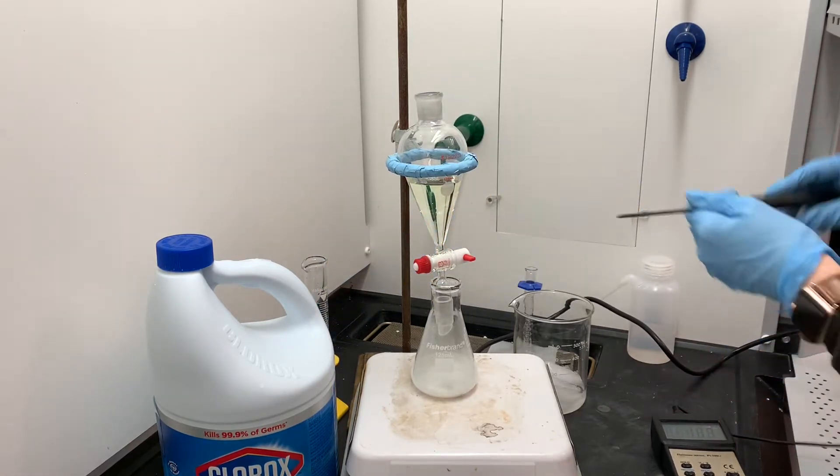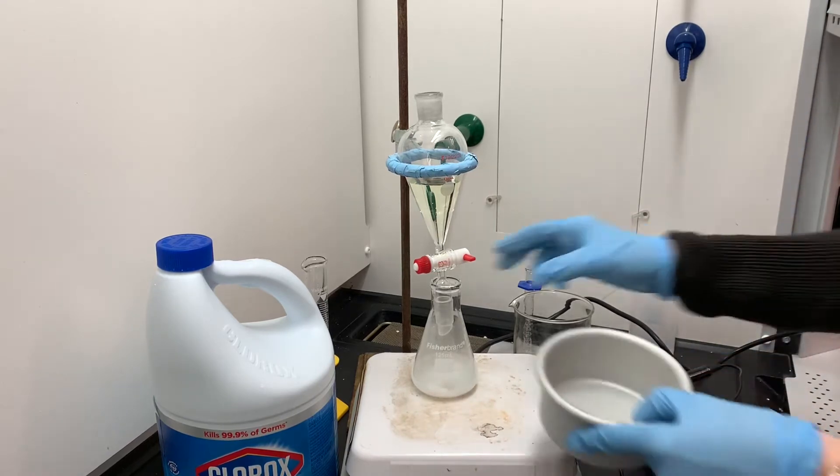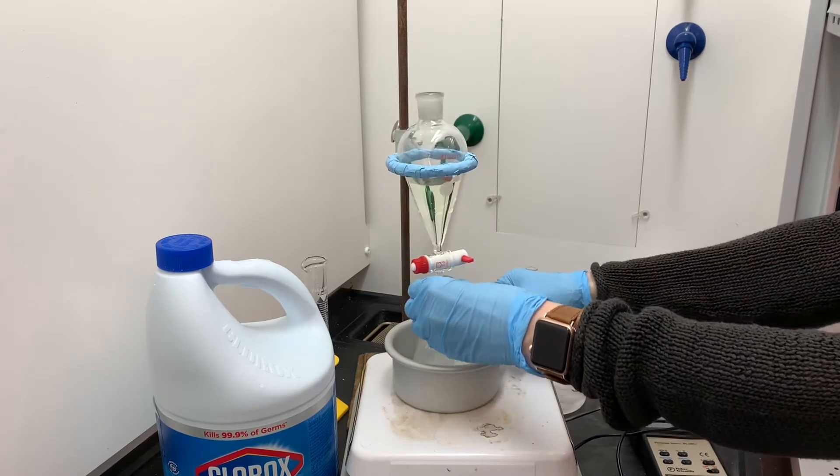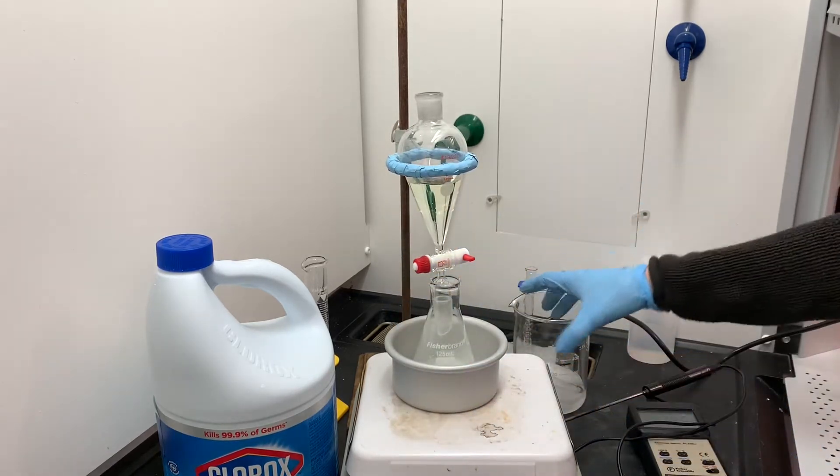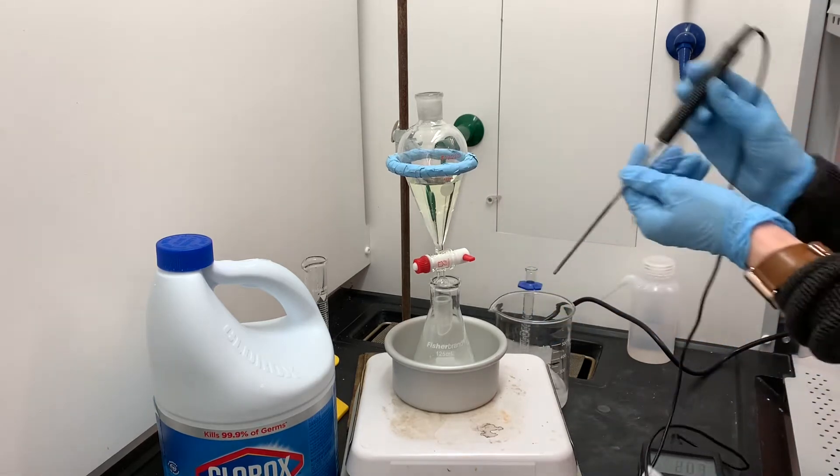I'm going to be monitoring the temperature by putting the thermometer directly into the Erlenmeyer flask, and just in case the reaction gets too hot, I'm going to place this metal dish underneath the Erlenmeyer flask and I'll be able to create an ice water bath right away just in case the temperature gets too hot.